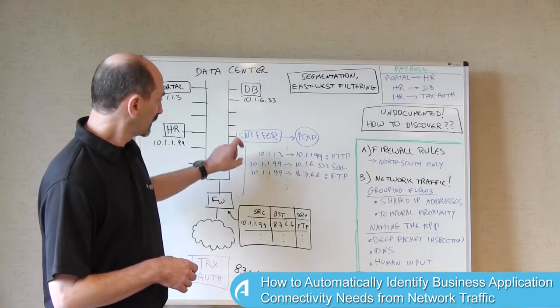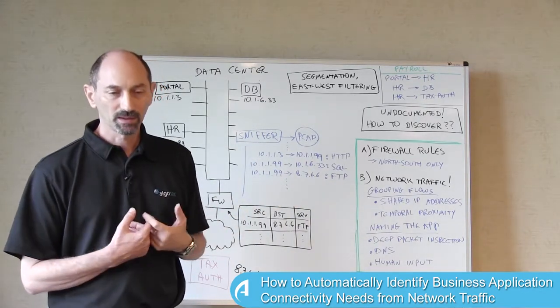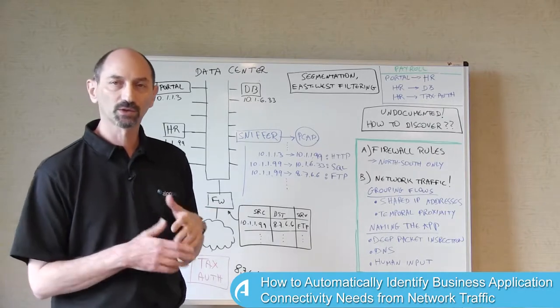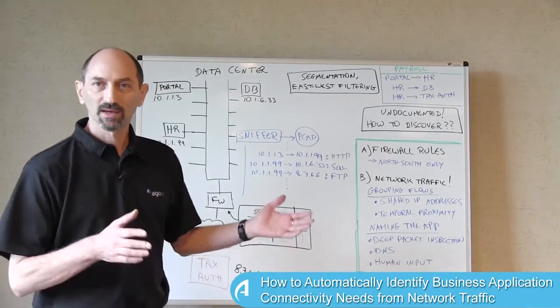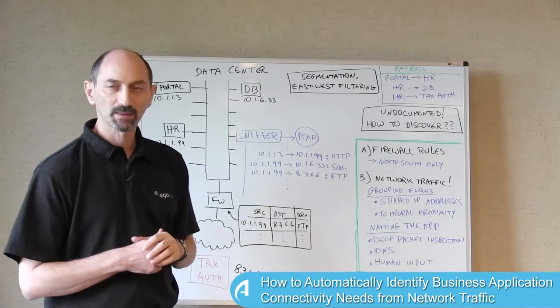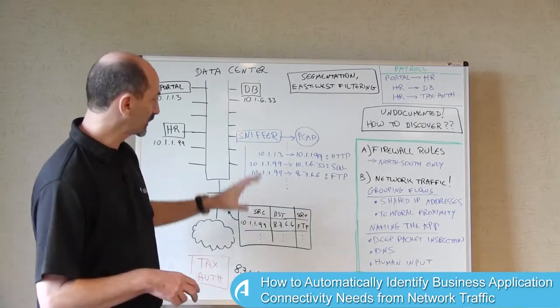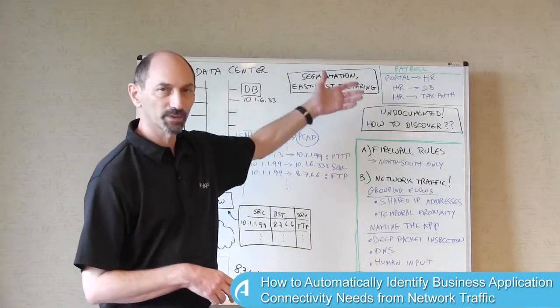then possibly these two packets are causally connected. One caused the other to occur and that means these flows are somehow logically related to each other and you can use that information to group them as well.